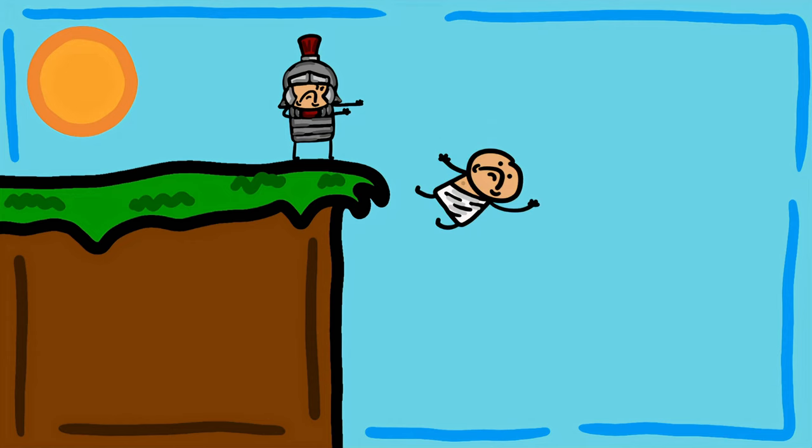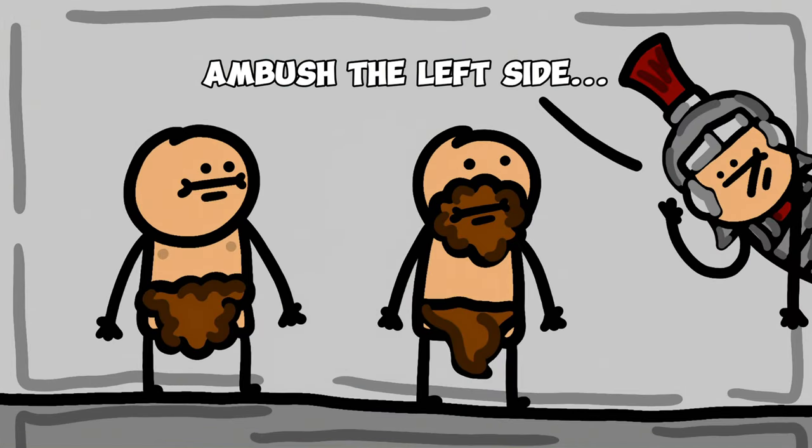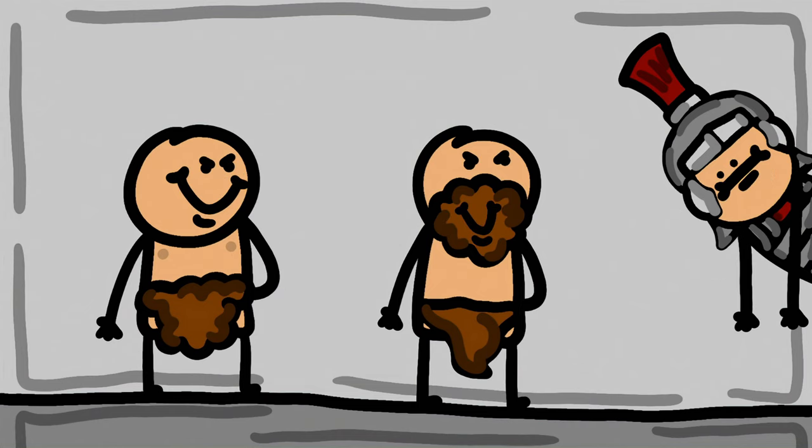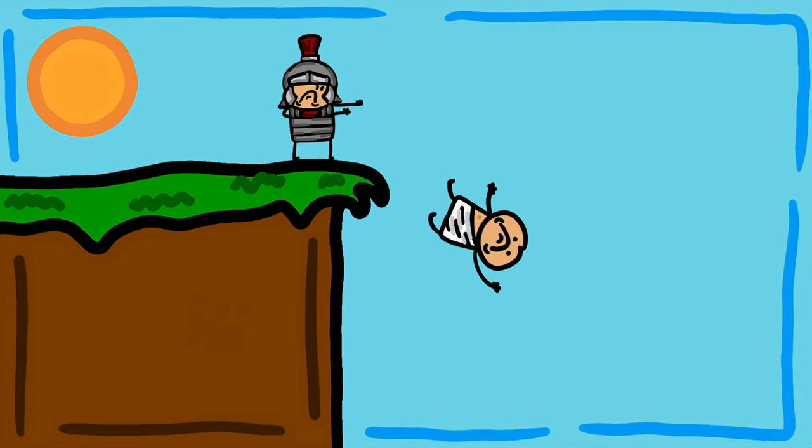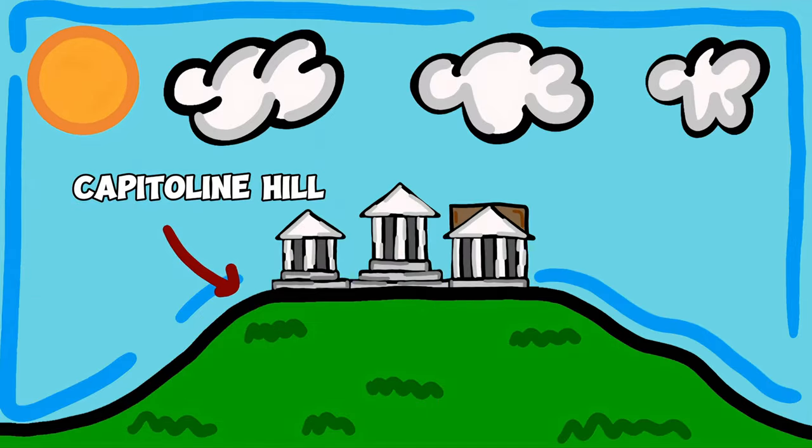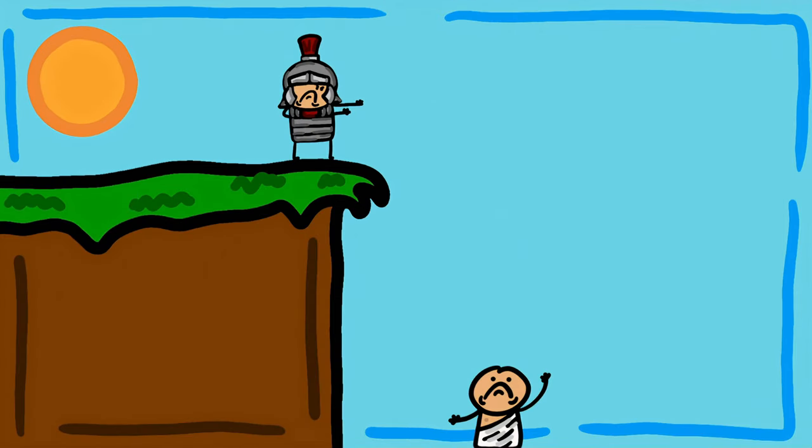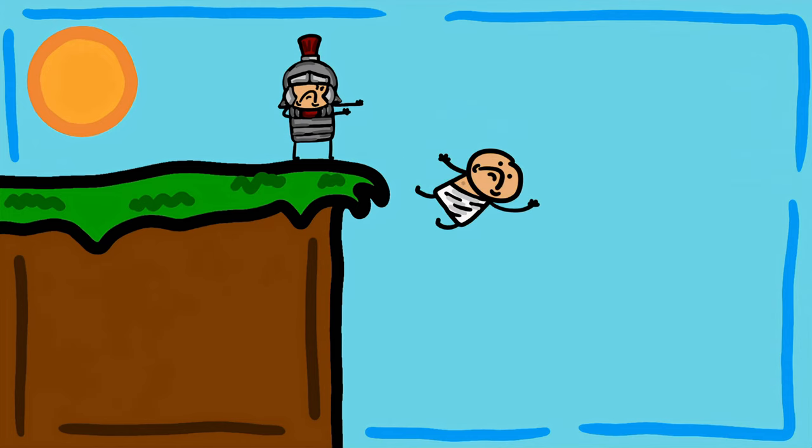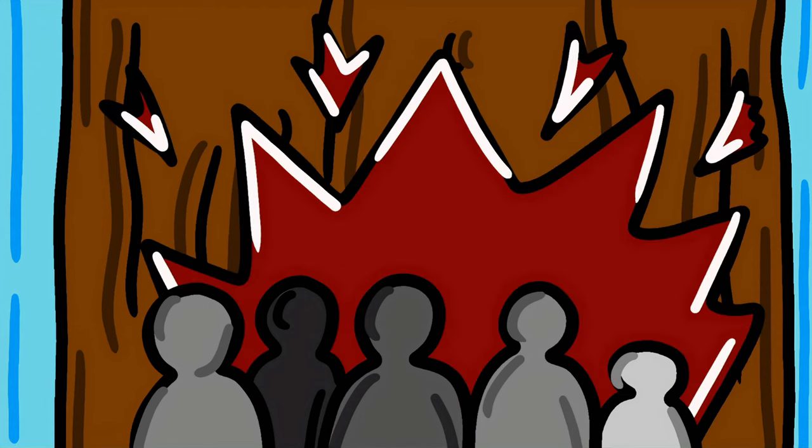Number 7: Tarpean Rock. Treason, particularly the selling out of the Roman state to enemy forces, would often see executions carried out by hurling the condemned from what is known as the Tarpean Rock, which is just a steep cliff on the southern summit of the Capitoline Hill. This mode of execution was both a punishment and a spectacle where it would be a long fatal fall for the criminal and a long enjoyable form of entertainment for the crowd.